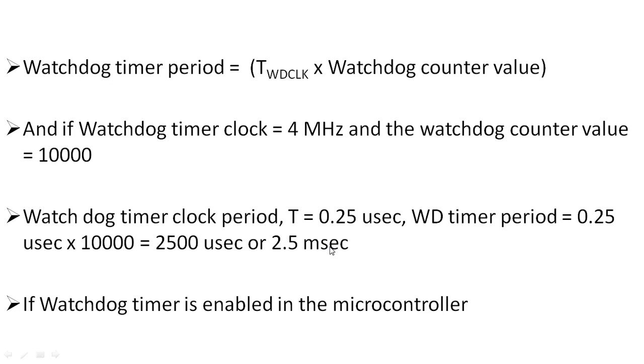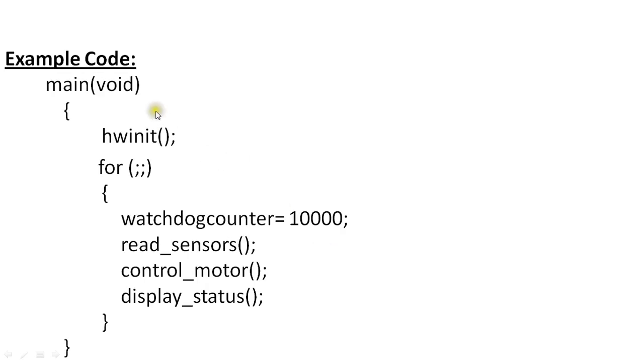This is the example code for loading the watchdog counter value. This is the program for reading the sensors, controlling the motors, and displaying the status on the LCD. This is the infinite loop, and the watchdog timer value is loaded every time in the loop.